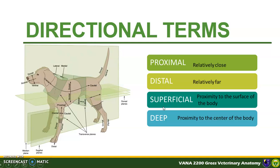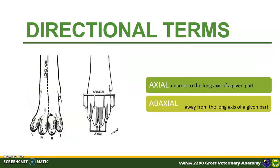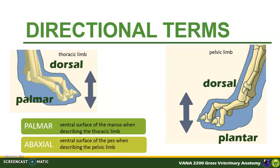The terms superficial and deep are also used as directional terms. Superficial refers to proximity to the surface of the body, while deep refers to proximity to the center of an anatomical structure. Axial is the term used in reference to a structure nearest to the long axis of a given part, while abaxial refers to structure away from the long axis. Palmar refers to the ventral surface of the manus when describing the thoracic limb, while plantar refers to the ventral surface of the pes when describing the pelvic limb; both dorsal sides are termed dorsal.